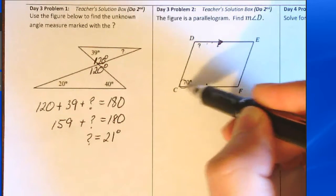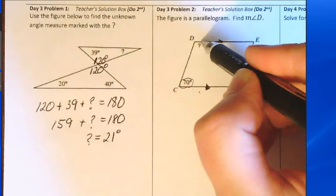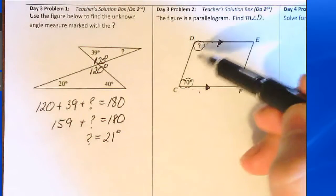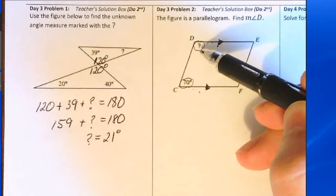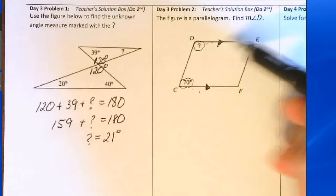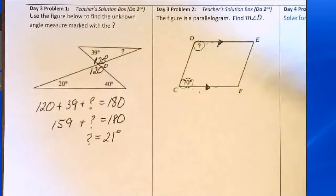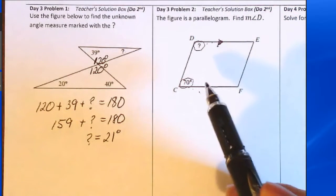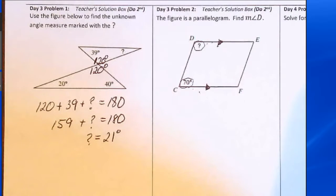This angle here, the 70 degrees, and this angle here with the question mark are same-side interior angles for those parallel lines. There's a theorem that says that same-side interior angles are supplementary.